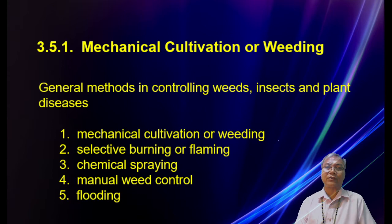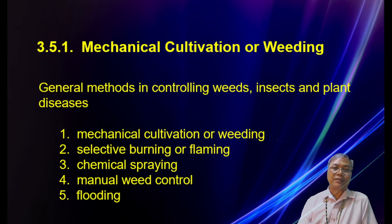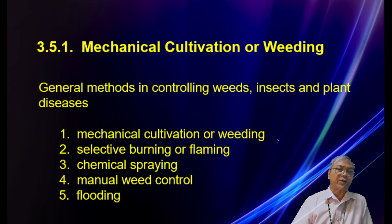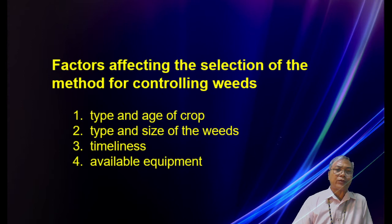The general methods for controlling weeds, insects, and plant diseases are: number one, mechanical cultivation or weeding; number two, selective burning or flaming; number three, chemical spraying; number four, manual weed control; and number five, flooding. Factors affecting the selection of weed control method include: the type and age of the crop, the type and size of the weeds, timeliness, and available equipment.